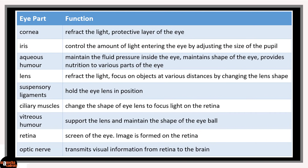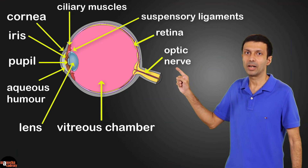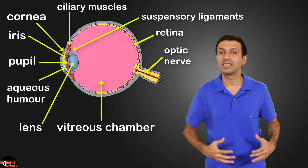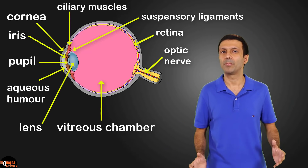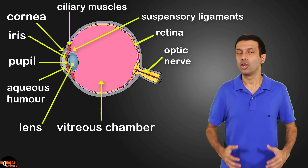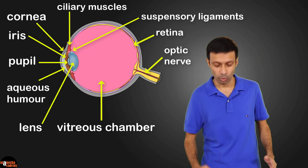Let's place the summary table of the parts of the human eye and their functions on our concept board. Now that we know the important parts of the human eye, let's understand how they work together to help us see. To understand the working of the human eye, it's useful to compare the eye to a camera.